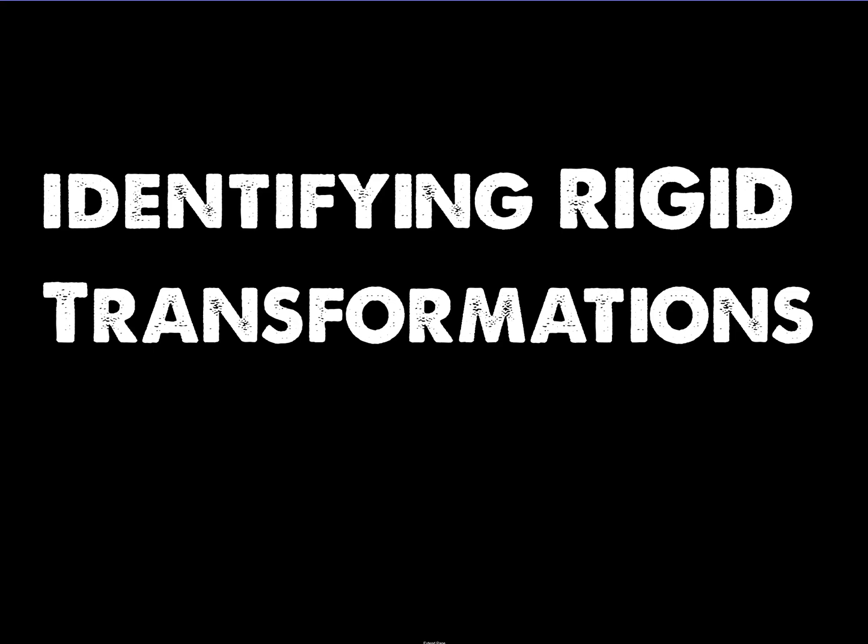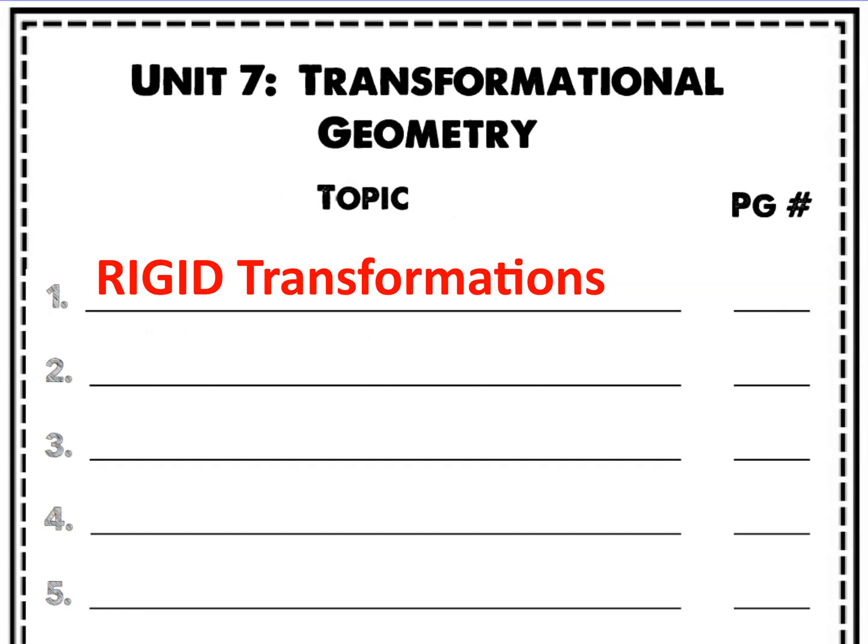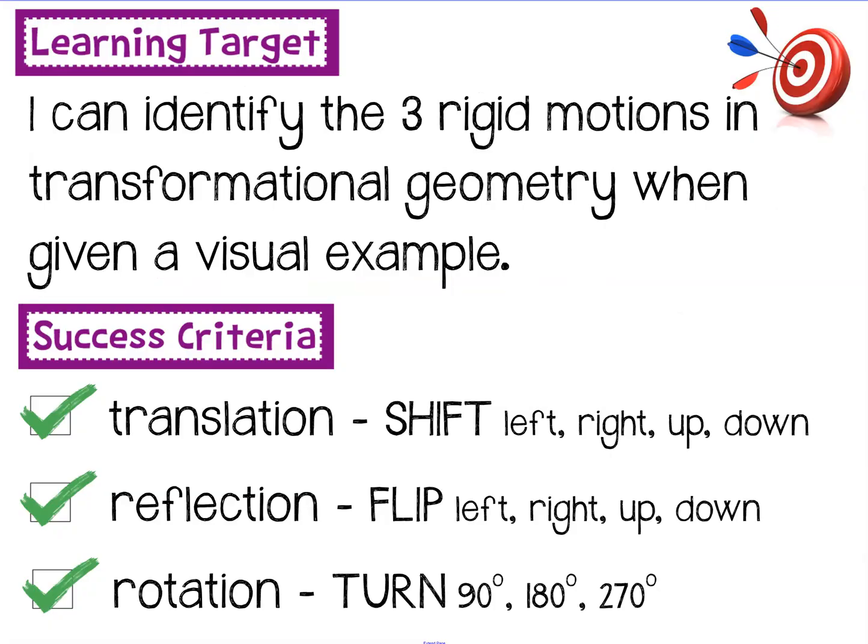In today's tutorial, we're going to learn how to identify the three rigid transformations. If you're following along in your notes, you can write this topic down in the table of contents with the appropriate page number. Hopefully you already previewed the prerequisite video, but by the end of this lesson, you should be able to identify the three rigid motions in transformational geometry when given a visual example.